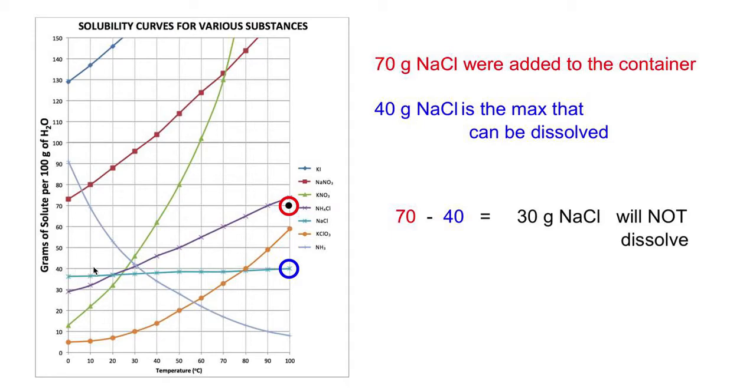If you go over here, that point is equal to 40 grams. So only 40 grams of salt can dissolve in 100 grams of water at 100 degrees Celsius, but yet somebody dumped in 70.